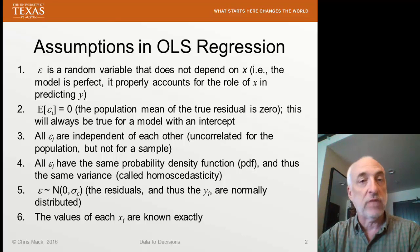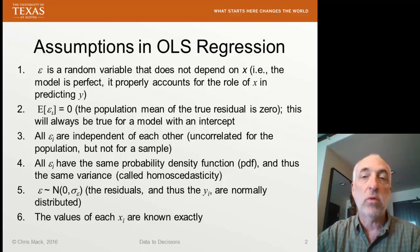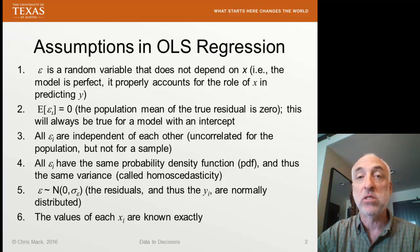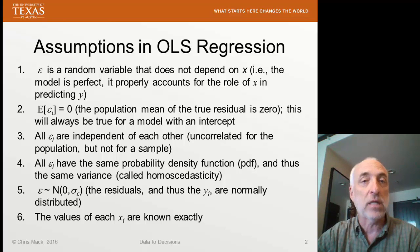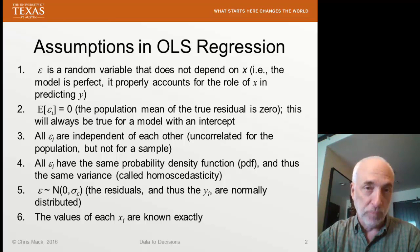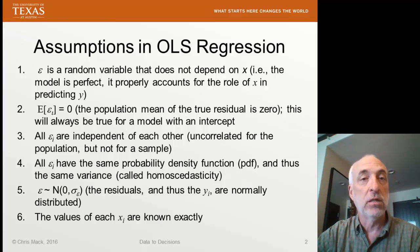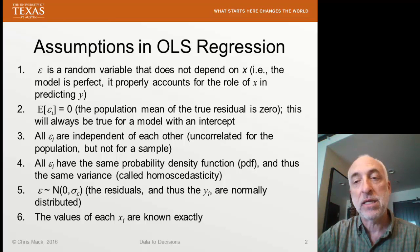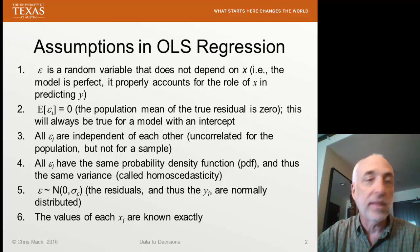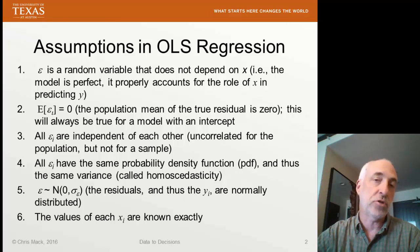We've seen in the last few lectures that Ordinary Least Squares Regression encompasses quite a few assumptions. If the assumptions are true, we have a lot of benefits to using Ordinary Least Squares Regression. In particular, the estimate is BLUE — Best Linear Unbiased Estimator. That means it's the best we can do. We get the best estimates possible if the assumptions of Ordinary Least Squares Regression are true. So let's check the assumptions.